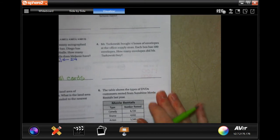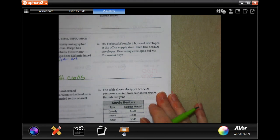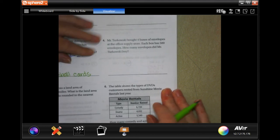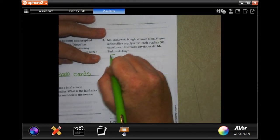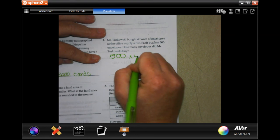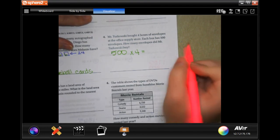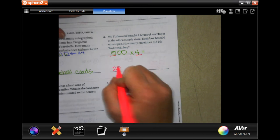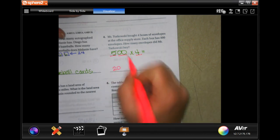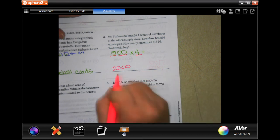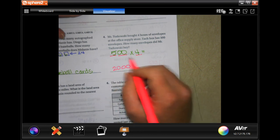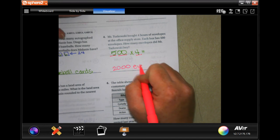Mr. T, because I am not about to try to pronounce that name, bought four boxes of envelopes at the supply store. Each box has 500 envelopes. How many envelopes did he buy? So we have 500 times four. This is going to be one of those ones that you cannot let that extra zero trip you up because four times five is 20, then you have to add those two zeros. Don't let it trick you into thinking that the zero is one of those two zeros because it is not.